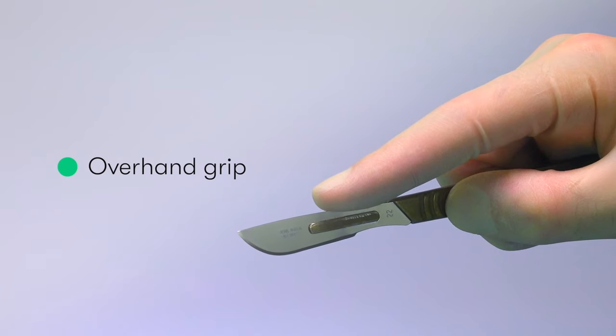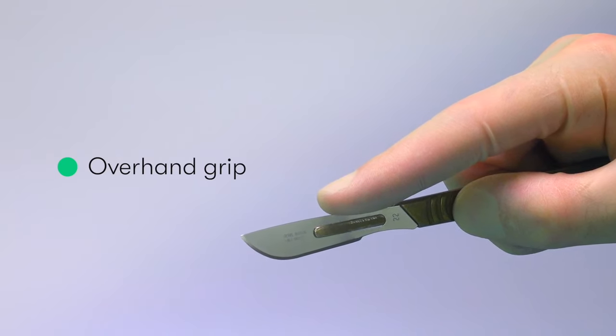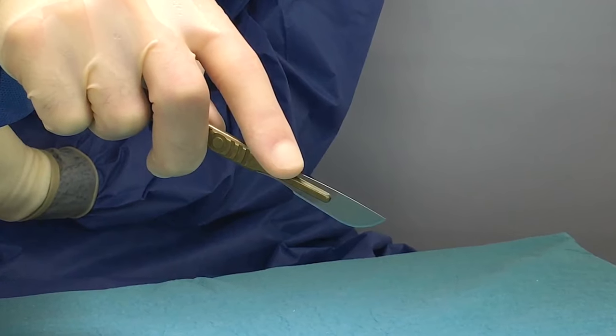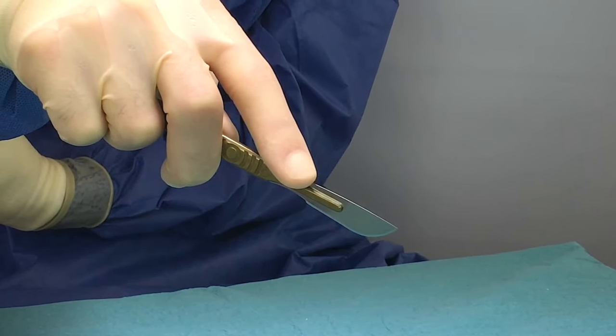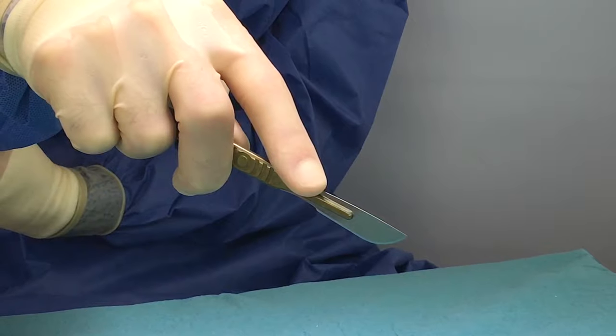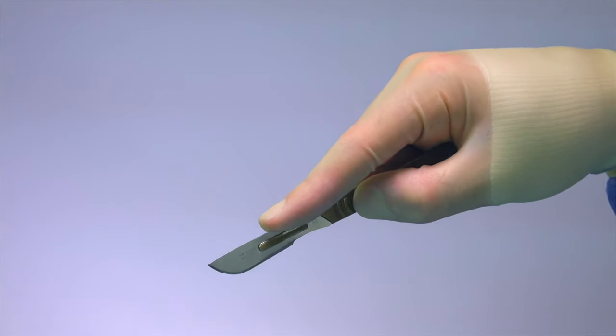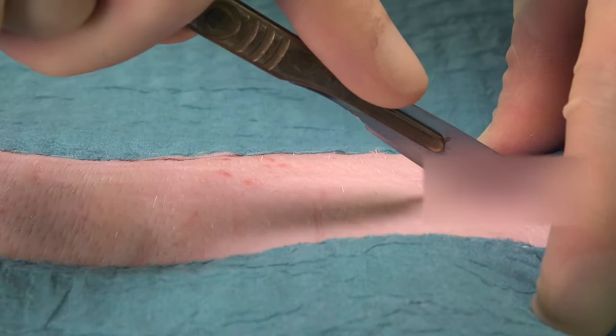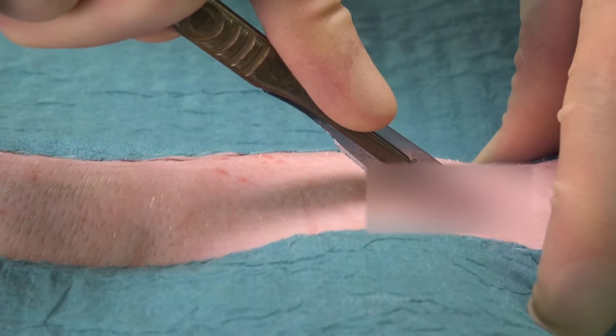We use the overhand grip typically when we're making large incisions such as that during a laparotomy. We can also use this grip when incising tough tissue, for example fascia. The index finger is positioned along the spine of the handle and the blade, and this allows us to stabilize the scalpel whilst applying downward pressure when making the incision.